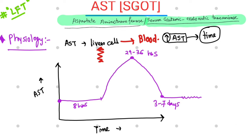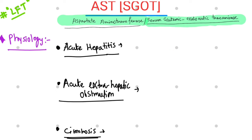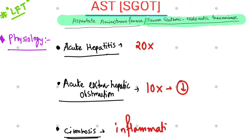If the cellular injury is chronic in nature, the AST level will persistently remain elevated. In case of acute hepatitis, the AST level might rise up to more than 20 times the normal value. In acute extra-hepatic obstruction — for example due to gallstones — the AST level quickly rises up to 10 times the normal value and then falls swiftly. In case of cirrhosis, the level of AST depends upon the degree of active inflammation.